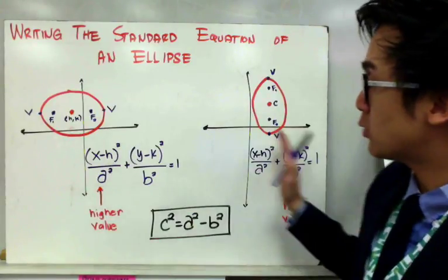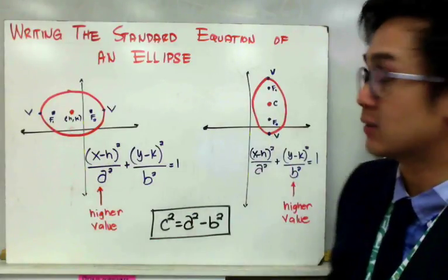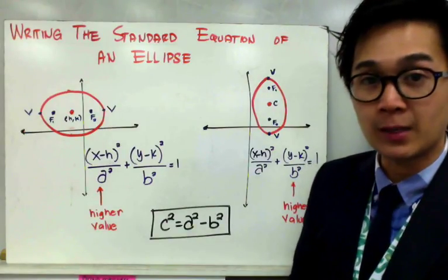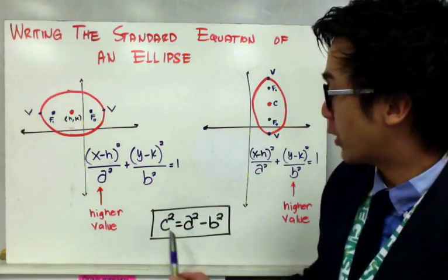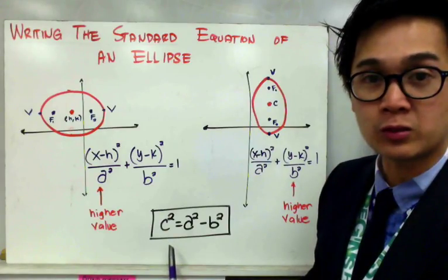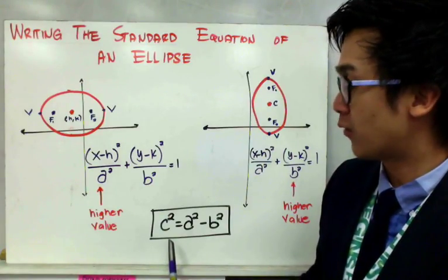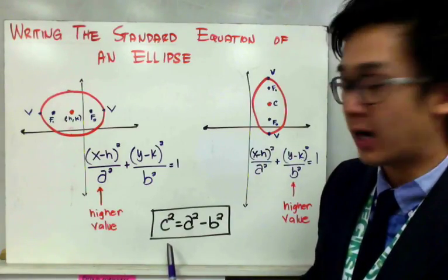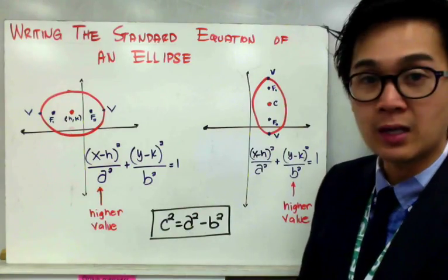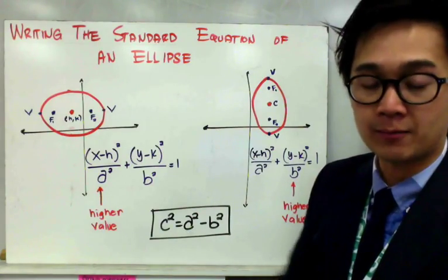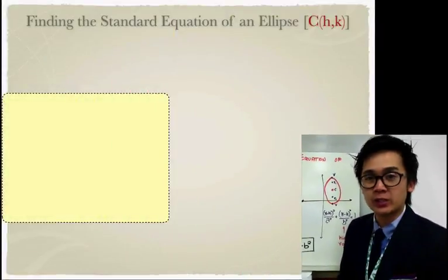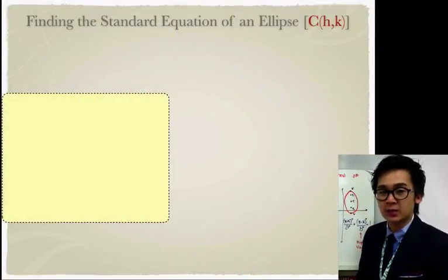This is what we will use today in constructing or writing the standard equation of an ellipse given its parts. We're also going to use the formula from the previous lesson for finding the foci: c squared is equal to a squared minus b squared. Now let's find the standard equation of an ellipse given its parts.